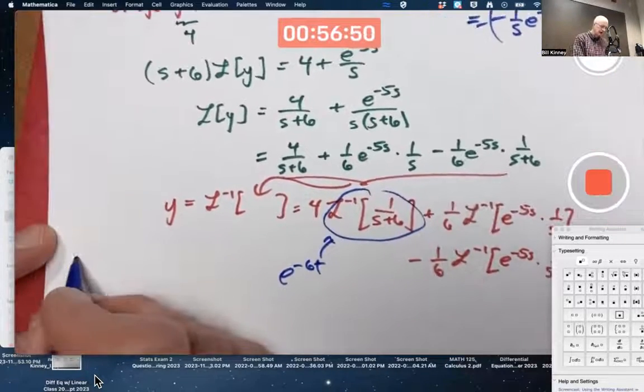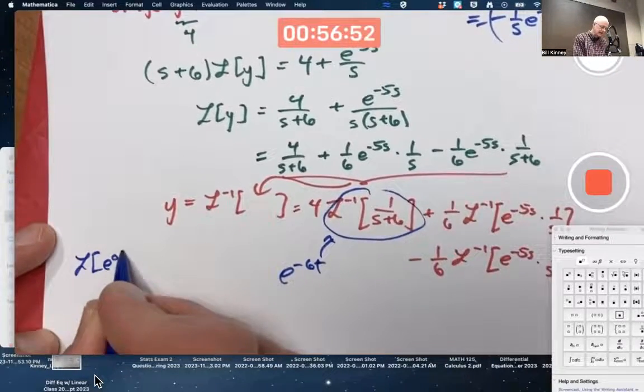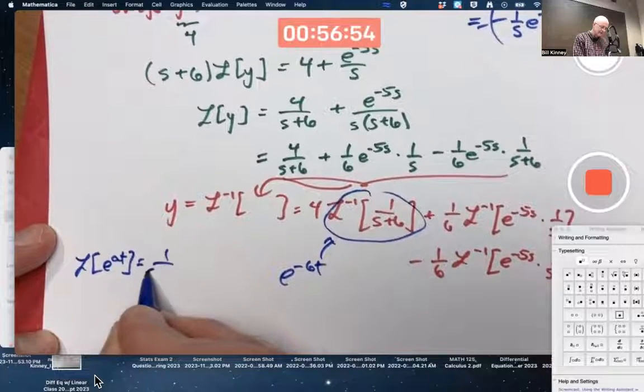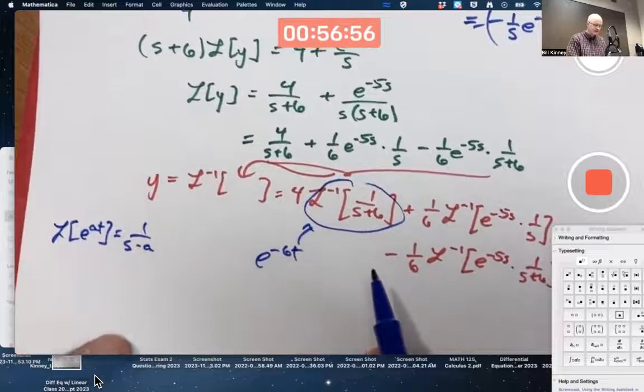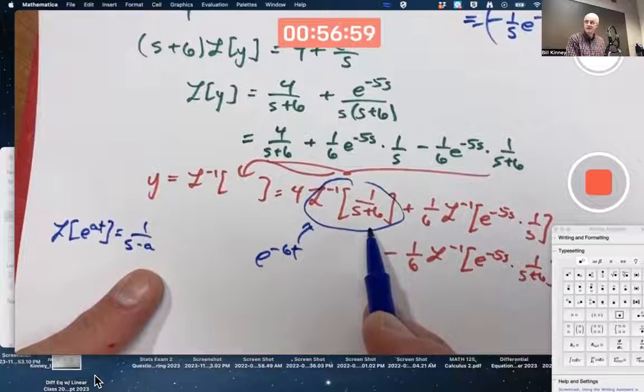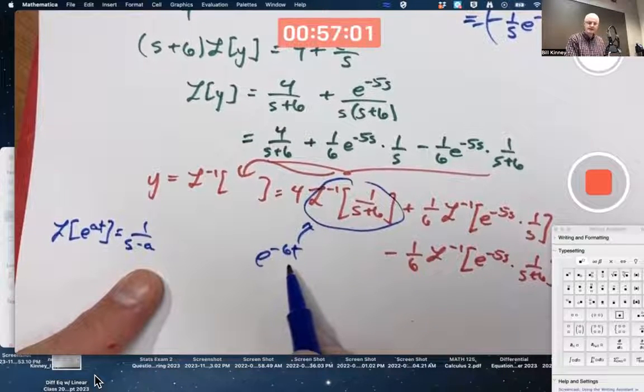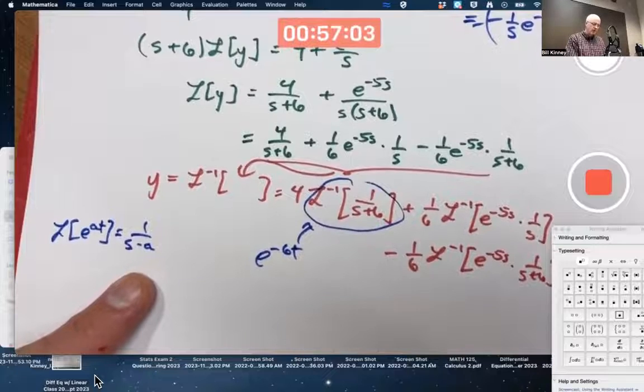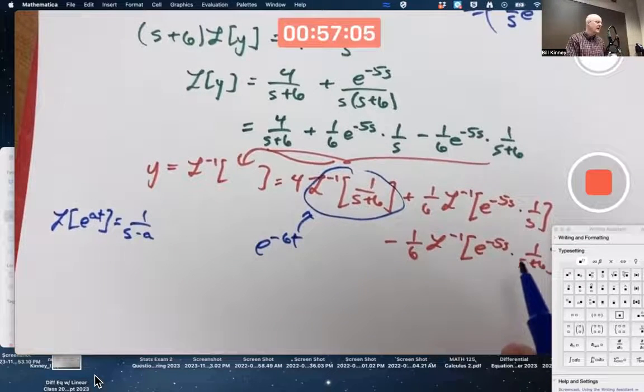That one's e to the negative 6t. Right? Because the Laplace transform of e to the at we've seen is 1 over s minus a. So the a is negative 6 here. That's why we get a negative 6 in front of that t there. But what about these things? We need a new property.